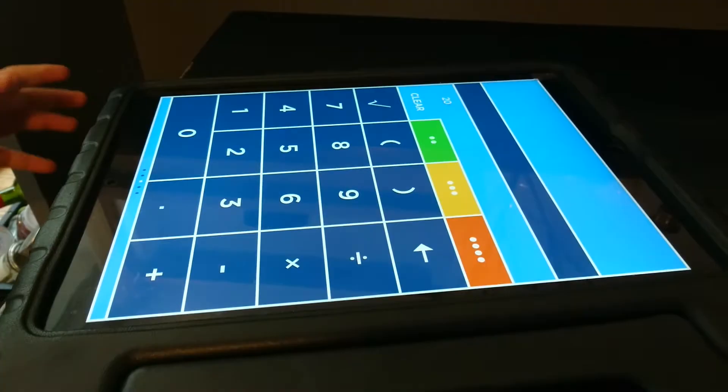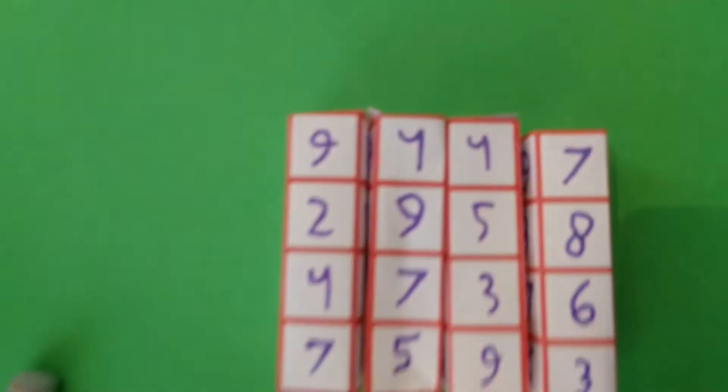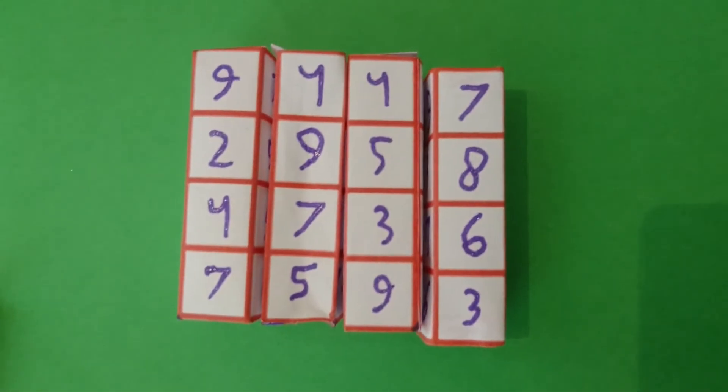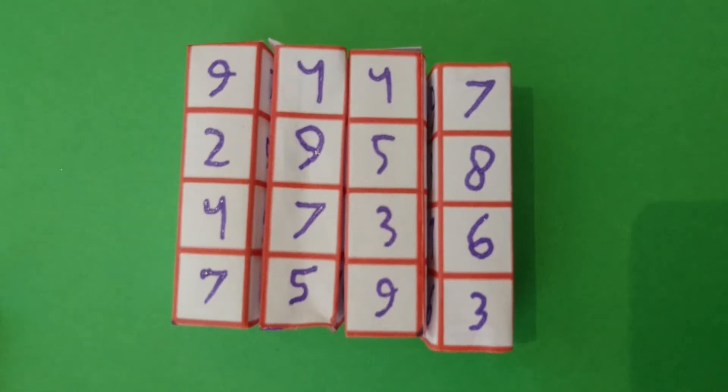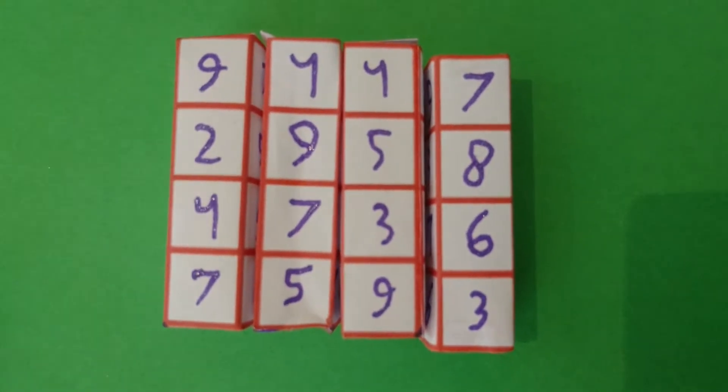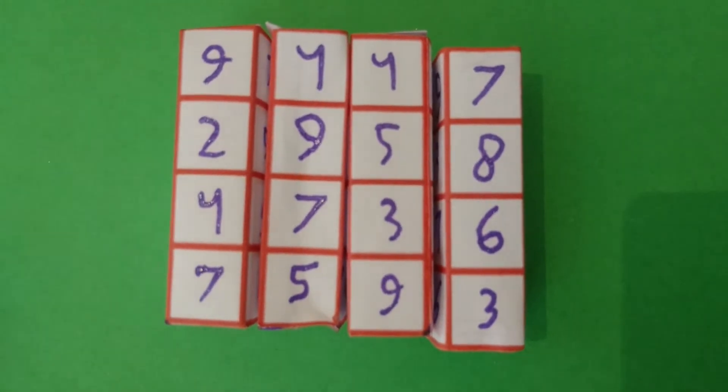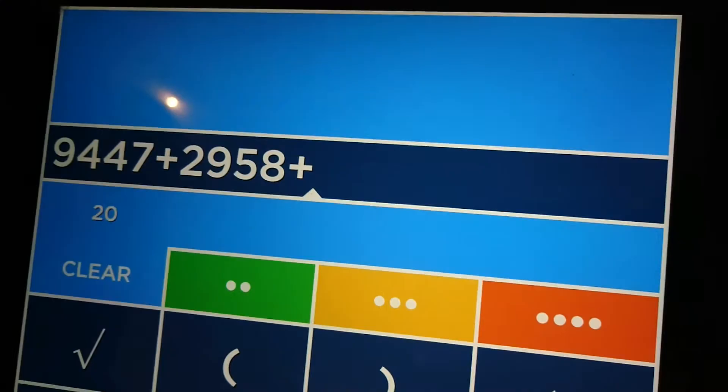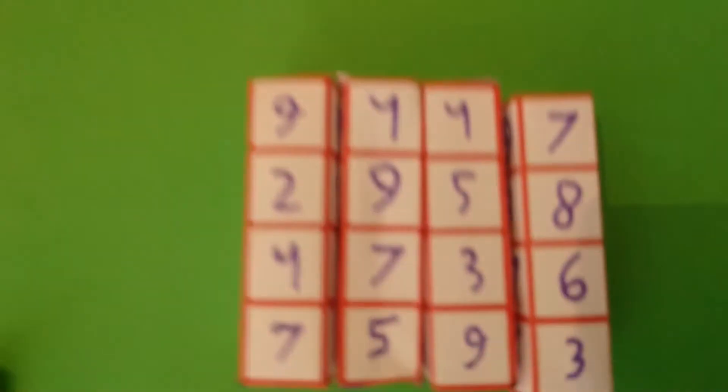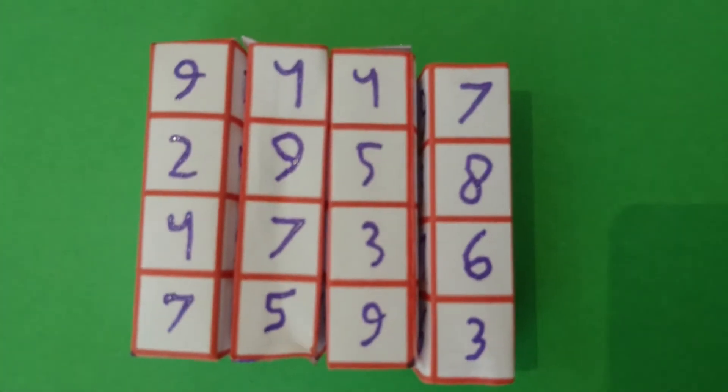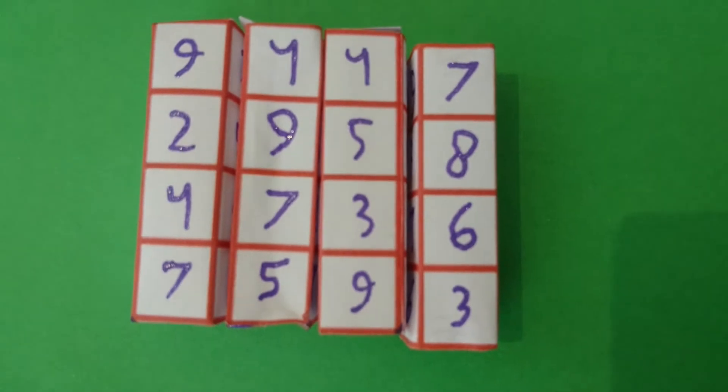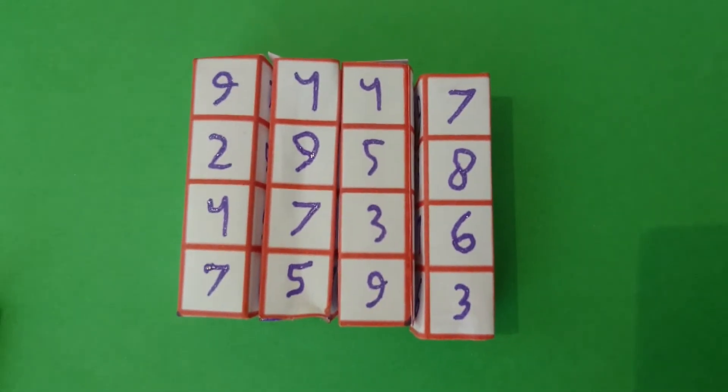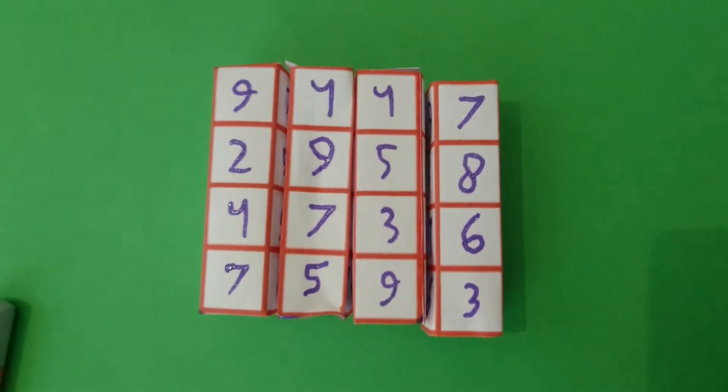Can you type that in? I'll tell you what the numbers are. It's 9,447 plus 2,958 plus 4,736, and the last one is 7,593.